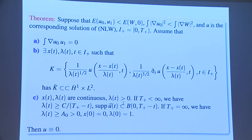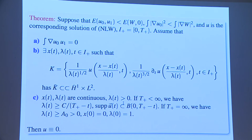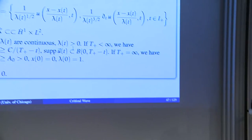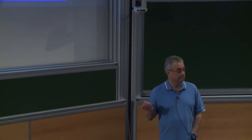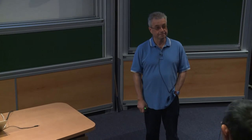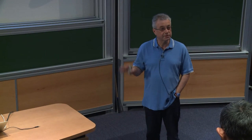We were able to manufacture a critical element which had all these properties, but we were also able to prove that the critical element had positive energy, so it couldn't be the zero function. So this critical element couldn't have existed, and since it couldn't have existed, the theorem had to hold. That was the scheme of the proof.